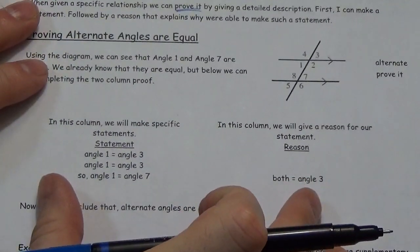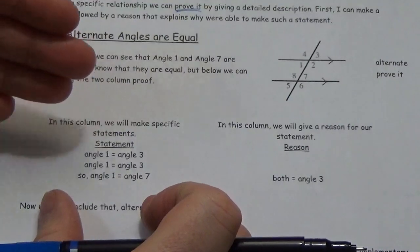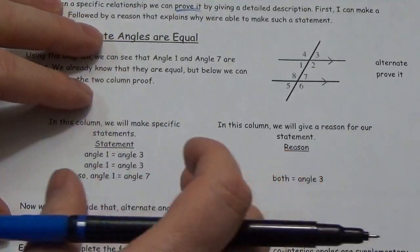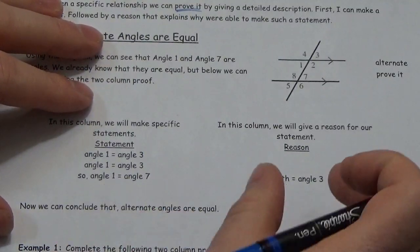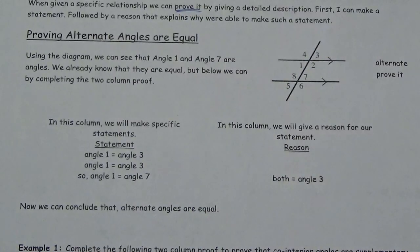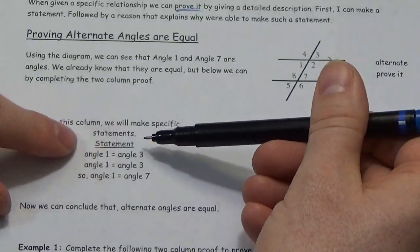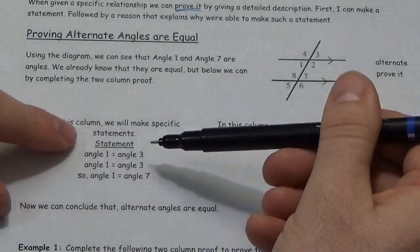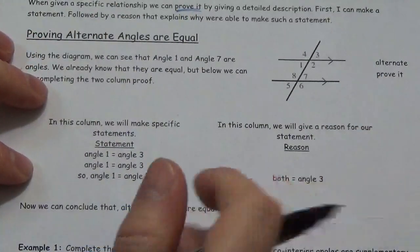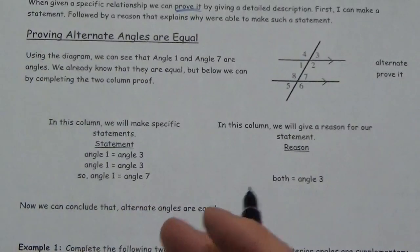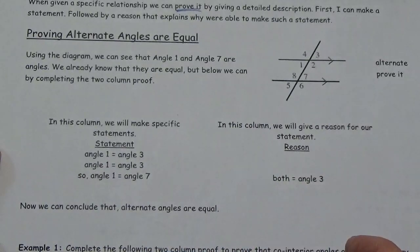Here's our two-column proof. The two columns are: we're going to make statements, and those statements follow from the information given in the problem, ending with the thing we're trying to prove. Then we give reasons all along the way as to why each of those statements is true. We start here, give a reason why we accept that as true, give reasons that all relate to one another, and therefore end up at our conclusion. Based on the truth of all the statements above, we can assume the truth of the conclusion.